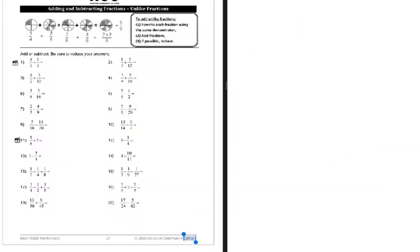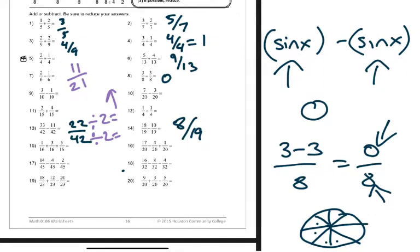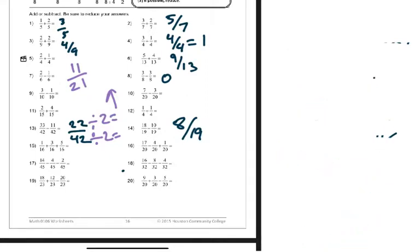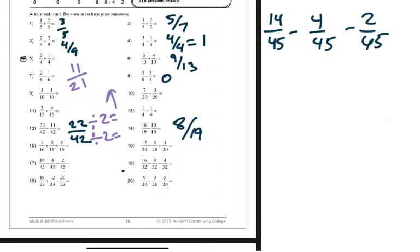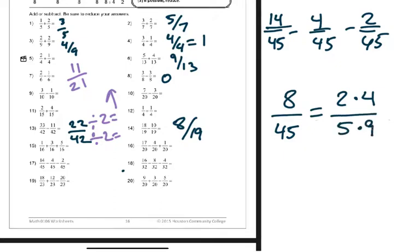They may give you more numbers, but at the end of the day all we're doing is adding and subtracting the top, then using the rules we learned earlier about reducing. Number seventeen: fourteen minus four is ten, ten minus two is eight, so eight over forty-five. If you're not certain if it's reducible, rewrite it as factors - eight is two times four, forty-five is five times nine. You can't put two or four into five or nine, so the answer is eight over forty-five.